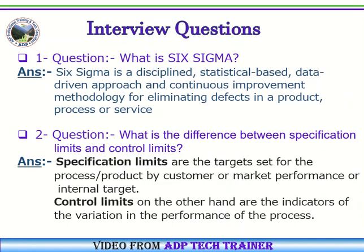Question Number 1: What is Six Sigma? Answer: Six Sigma is a disciplined, statistical-based, data-driven approach and continuous improvement methodology for eliminating defects in a product, process or service.